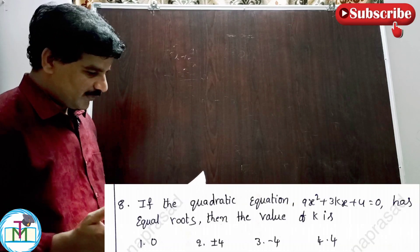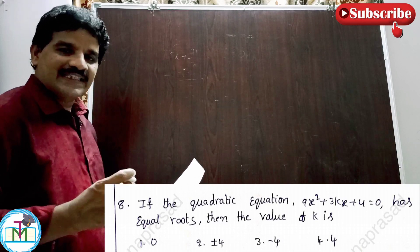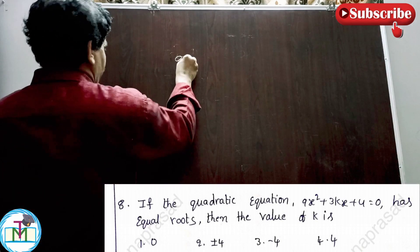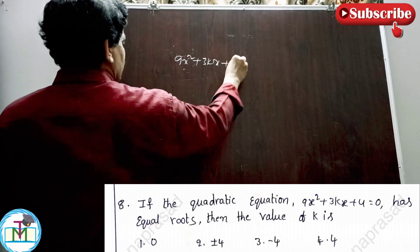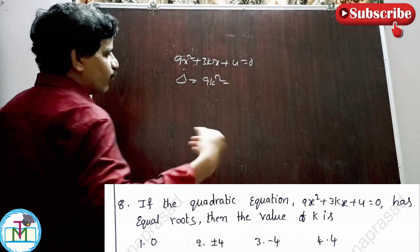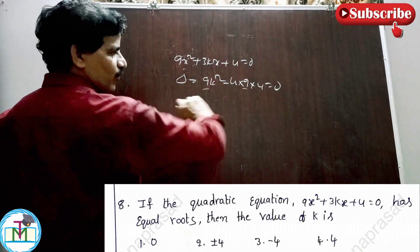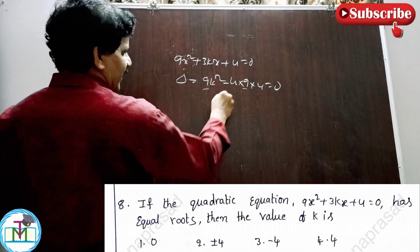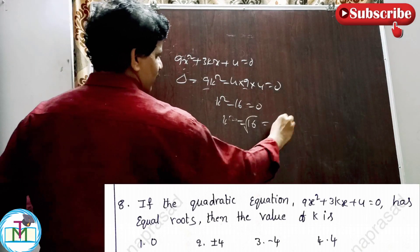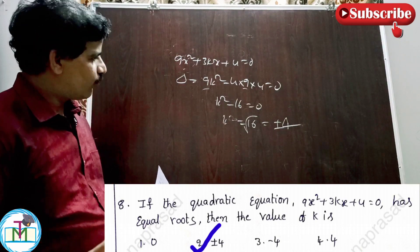Question number 8: If the quadratic equation 9x² + 3kx + 4 = 0 has equal roots, find k. Equal roots means discriminant Δ = 0. So b² - 4ac = 0: (3k)² - 4(9)(4) = 0, giving 9k² - 144 = 0. Taking out common factor 9: k² - 16 = 0, so k² = 16 and k = ±4. Option 2, plus or minus 4, is the right answer.